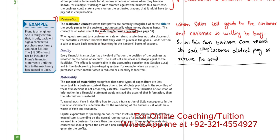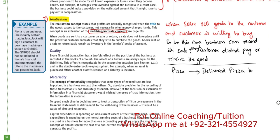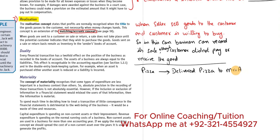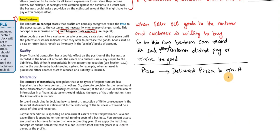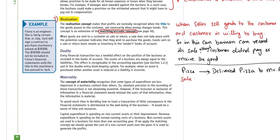For example, if we order a pizza and the pizza business delivers it to Mr. A, even while the pizza is on its way and Mr. A hasn't received it yet, since Mr. A intends to buy and the seller has dispatched it, the business should record the sale. This is the realization concept.